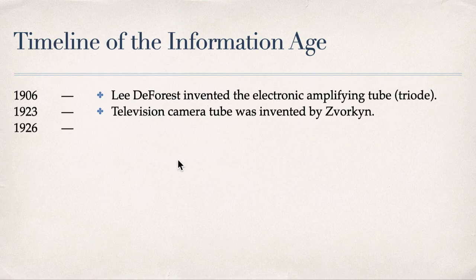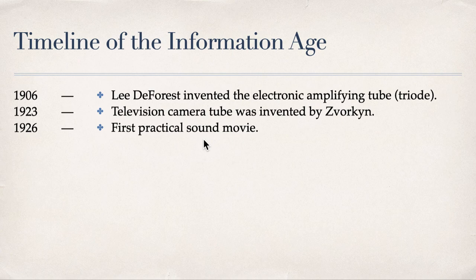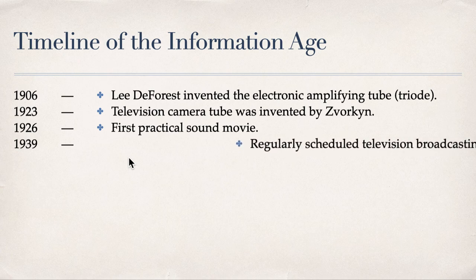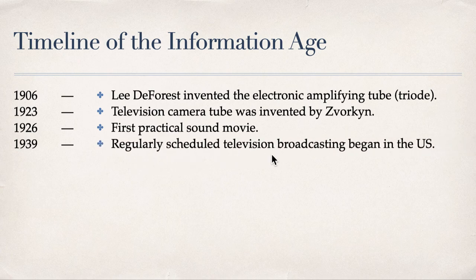Three years later in 1926, the first practical sound movie was produced. Then in 1939, regularly scheduled television broadcasting began in the United States — the TV was still fresh, yet broadcasting had already started before 1940.